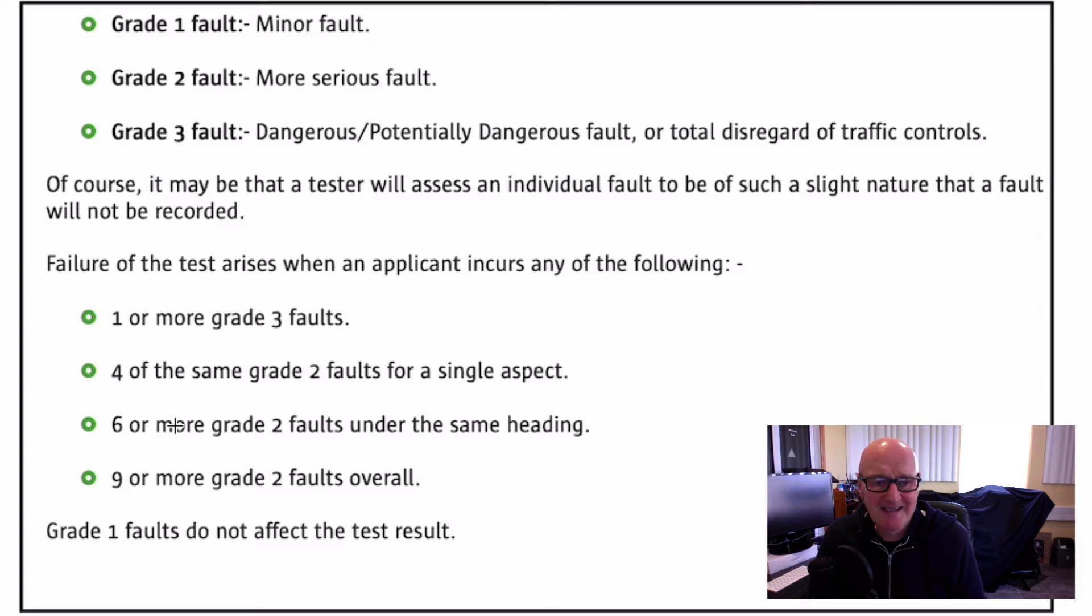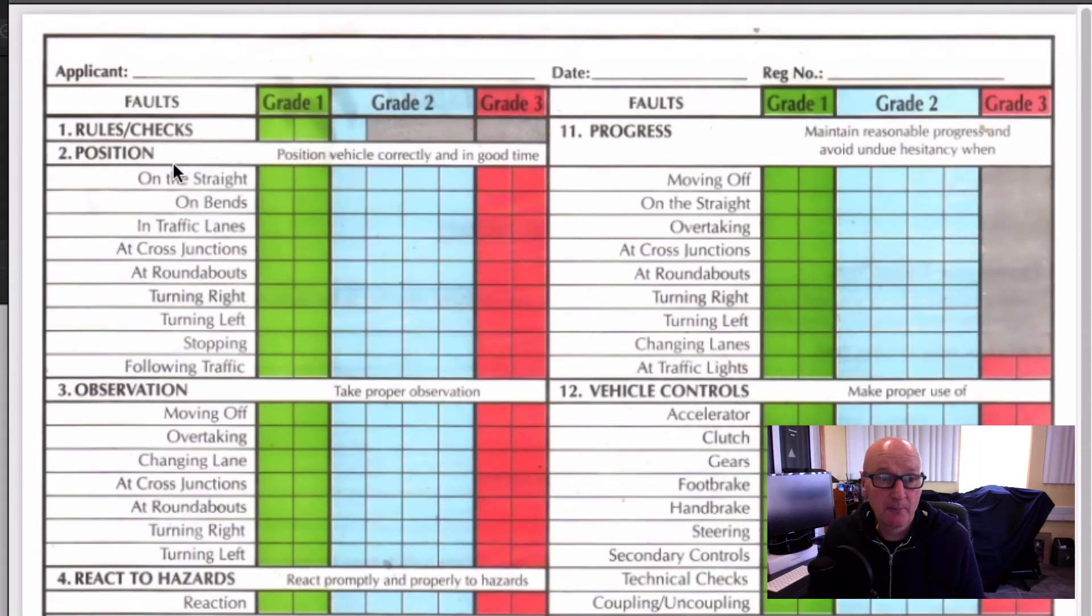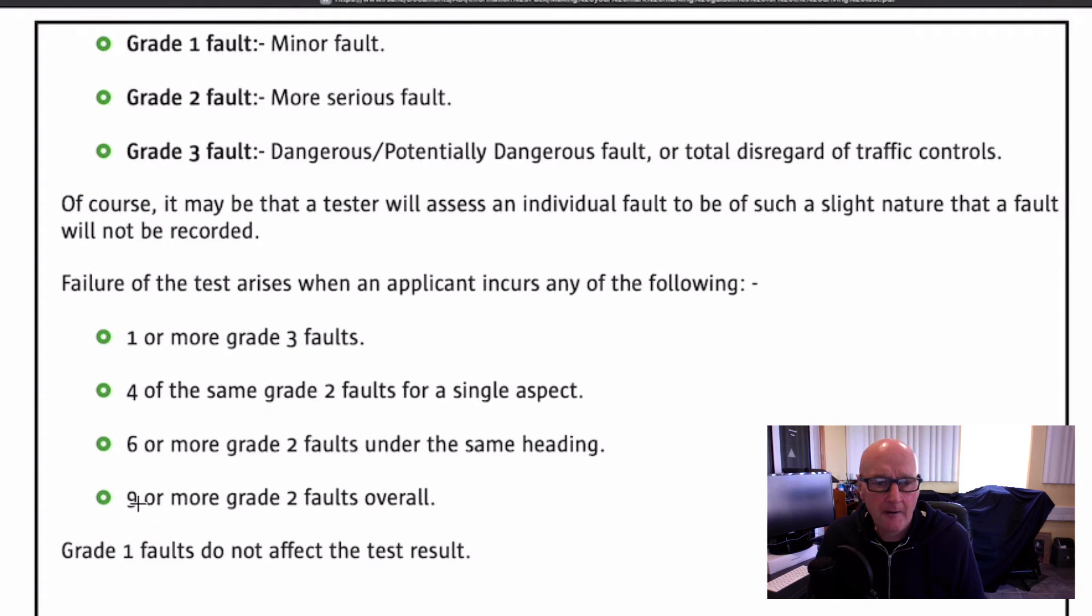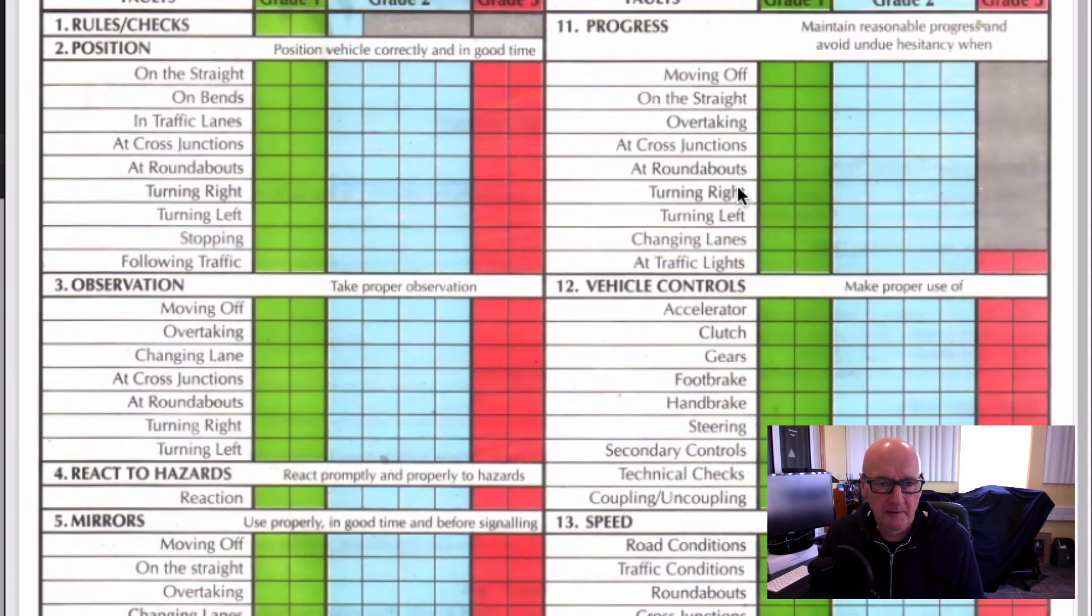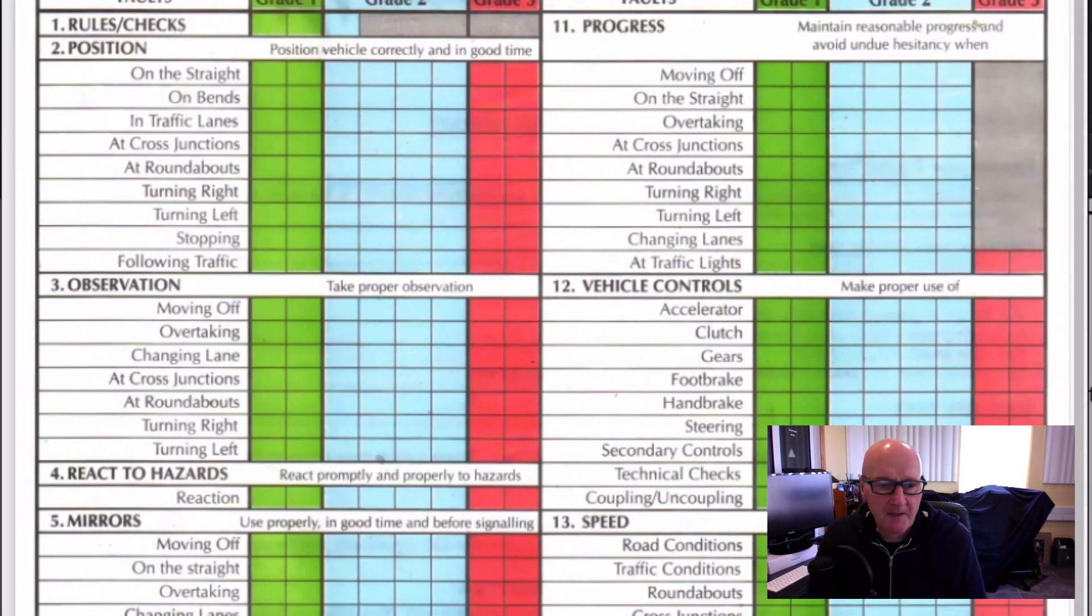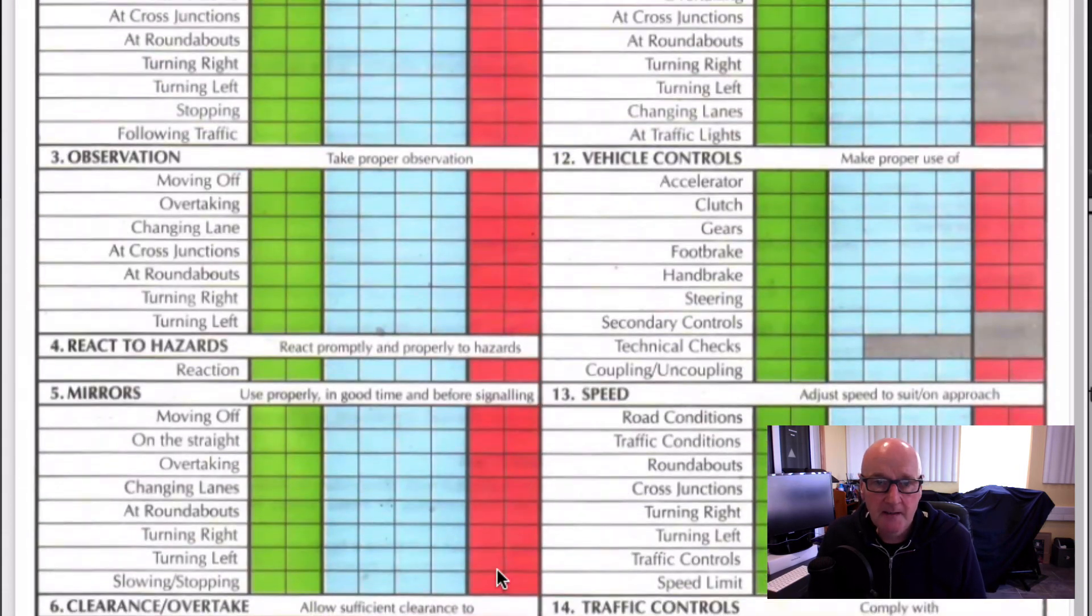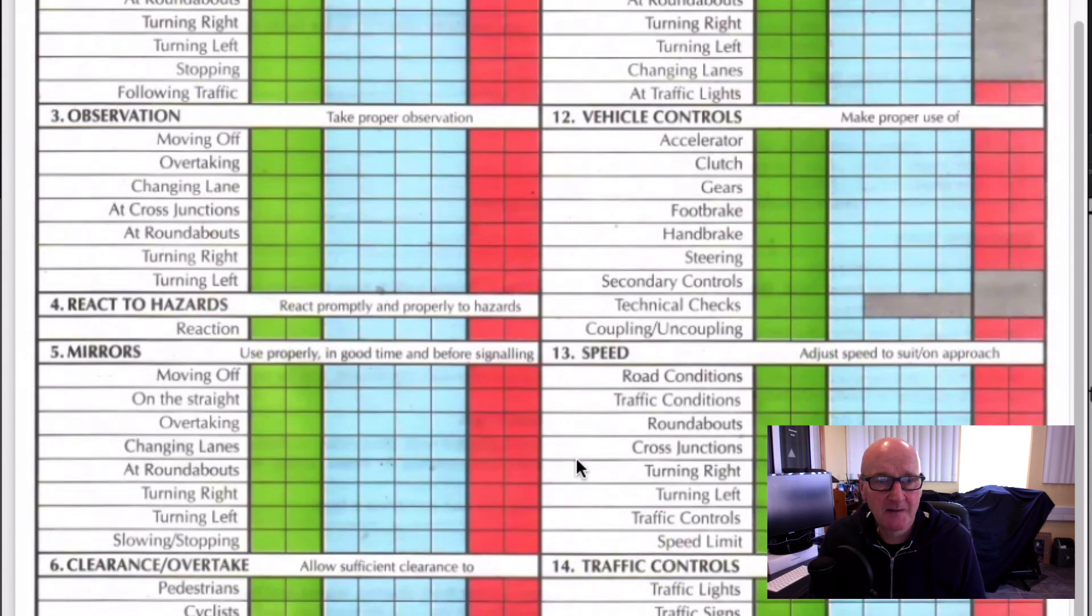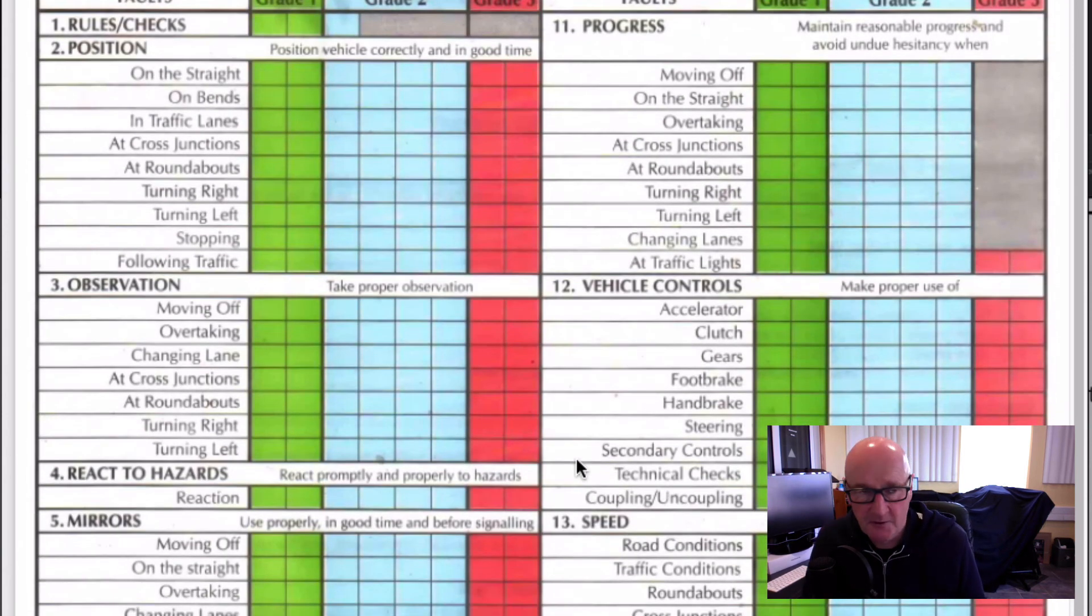So that's four of the same, six or more grade two faults under the same heading. So the same heading would be position, for instance, with stable position. And if you were to have six or more grade two faults in this area, that would lead to test failure, or nine or more grade two faults overall. So completely throughout your marking sheet, if you were to have nine grade two errors in different areas of this marking sheet, then you would fail your driving test.